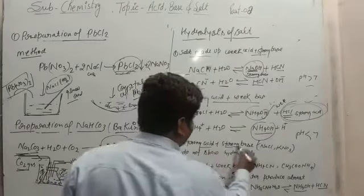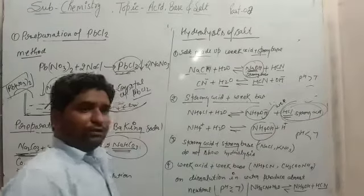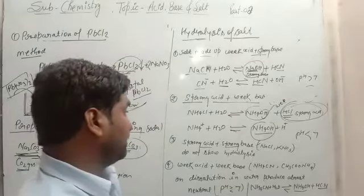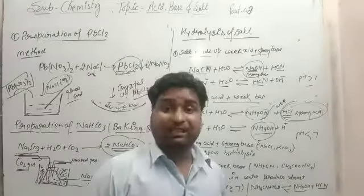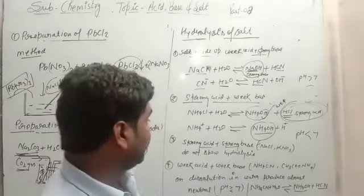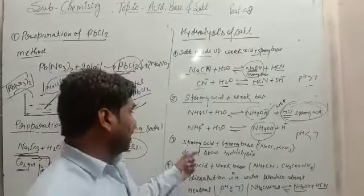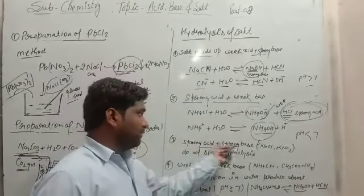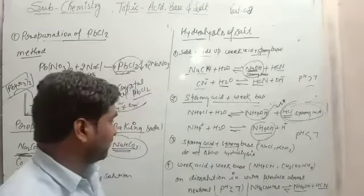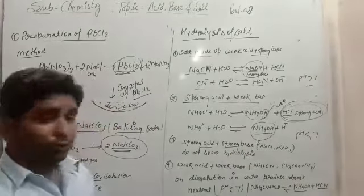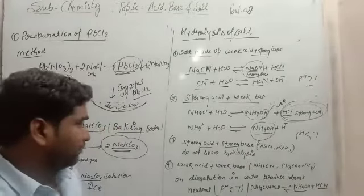Now next is the third type — salt formed from a strong acid and strong base. This produces a neutral salt. They do not show hydrolysis.